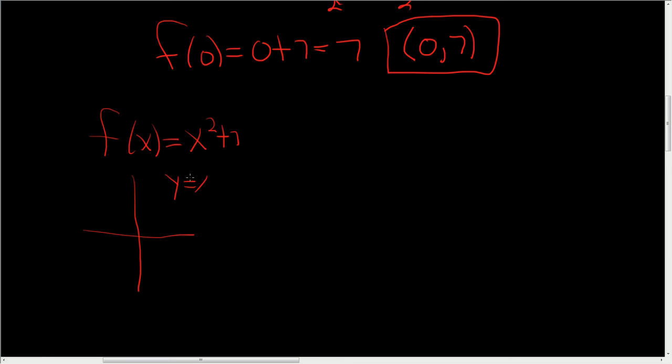y equals x squared looks something like this. It's a parabola with vertex at the origin. And when you add the seven, you shift it up by seven.